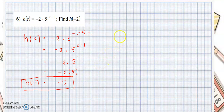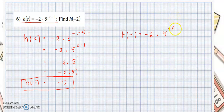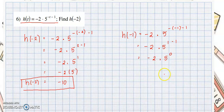Now find h of negative 1 using the same function. Substituting: negative 2 multiplied by 5 raised to negative of negative 1, minus 1. Simplifying: negative of negative 1 is positive 1, minus 1 gives 5 raised to 0. Take note: any number or variable raised to 0 equals 1. So this is negative 2 times 1, which equals negative 2. Therefore h of negative 1 equals negative 2.